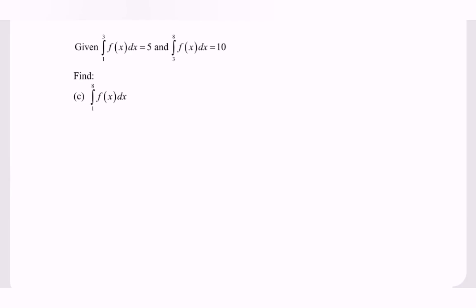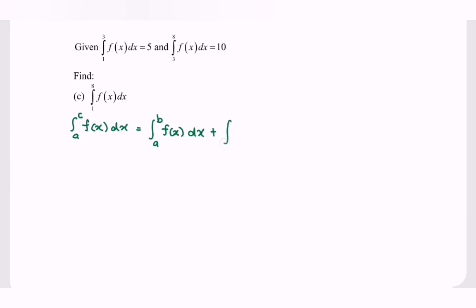Referring to question (c): integrate f(x) with respect to x for the limits 1 to 8. We refer to the property: the integral of f(x) from a to c equals the integral from a to b plus the integral from b to c.